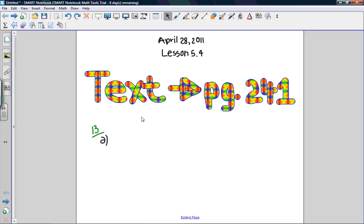Today is April 28th, and I will be doing question 13a from lesson 5.4. It is found in textbook page 241. The question asks to factor this expression: y equals x squared minus 4x minus 12.